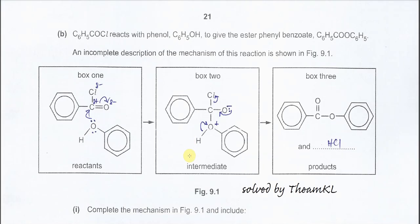For part b, the mechanism is nucleophilic addition-elimination. It starts with a nucleophile — in this example, phenol acts as the nucleophile. Draw one lone pair on the oxygen; that lone pair donates to the acyl carbon (carbonyl carbon), forming a new C-O bond. Once the new bond forms, the pi bond in the carbonyl group breaks, and the electrons move to oxygen.